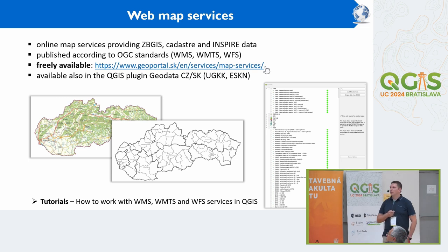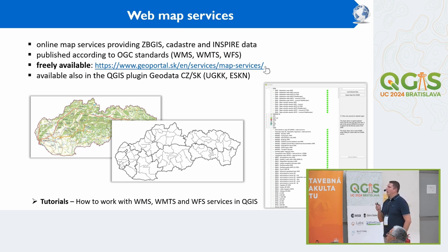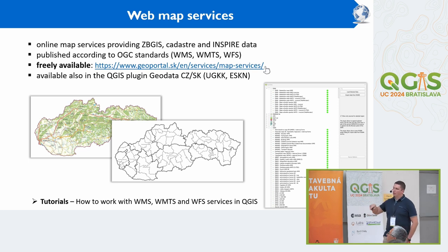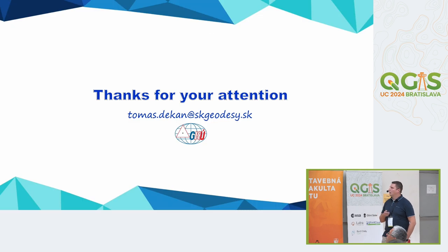The last topic is WMS services, which we provide in OGC standards. You can easily find the links on our GeoPortal and connect them to your software application to use freely. You can also find them through a QGIS plugin called GeoData SK, which lists all our WMS services and cadastre services, and also allows downloading administrative boundaries as vector files. Thank you for your attention — if you have any questions, I would like to answer them.